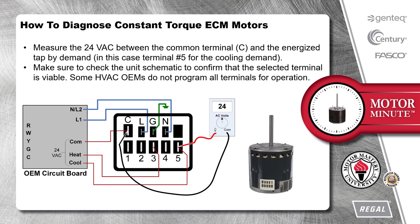Measure the 24-volt AC between the common terminal C and the energized TAP by demand — in this case terminal number 5 for the cooling demand. Make sure to check the unit schematic to confirm that the selected terminal is viable, as some HVAC OEMs do not program all terminals for operation.